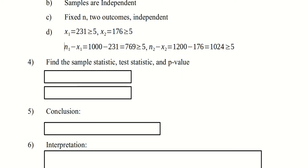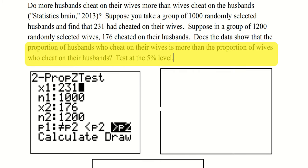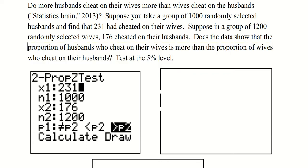We put this in the calculator to get our sample statistics — that's just the number of successes over the number of trials. This is a two-proportion z-test — z because it's a proportion. We enter the number of successes for the first sample: 231 husbands who cheated on their wives, with n sub 1 equal to 1,000. For the second population: 176 wives who cheated on their husbands out of 1,200. We're asking if p sub 1 — the population proportion of husbands who cheat — is greater than p sub 2, the proportion of women who cheat in the population.